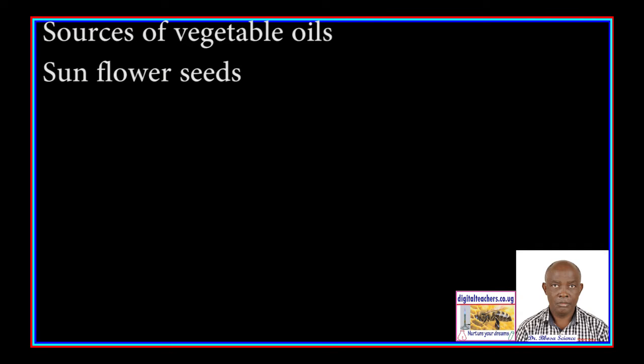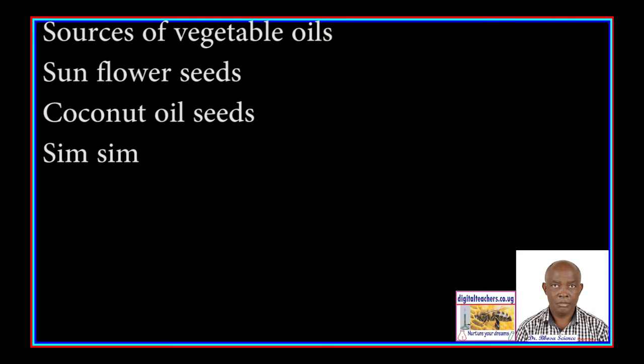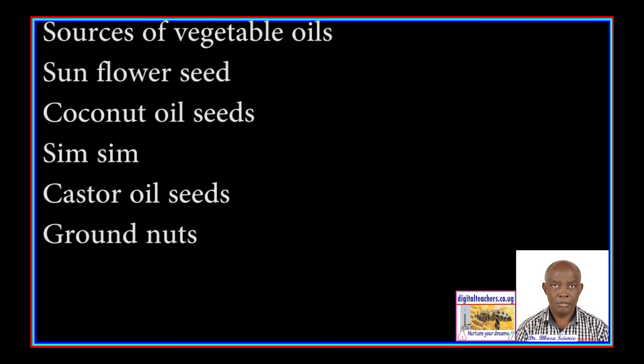Sources of vegetable oils: sunflower seeds, coconut seeds, sim-sim, castor seeds, ground nuts, and cotton seeds.